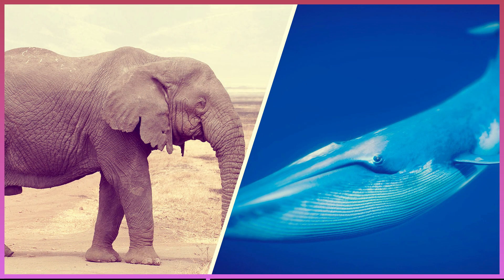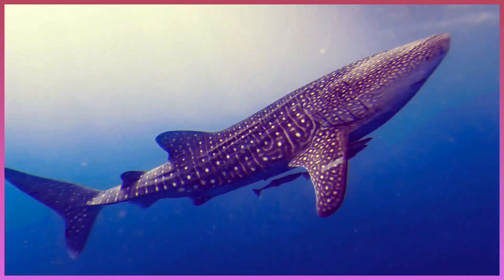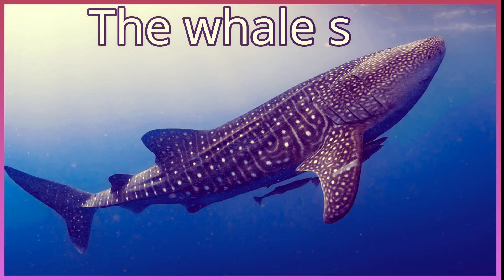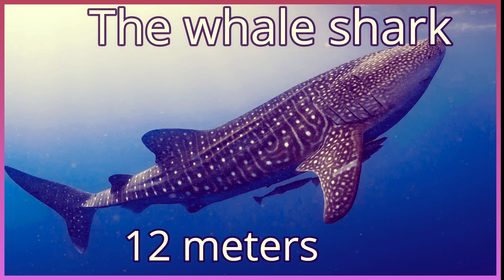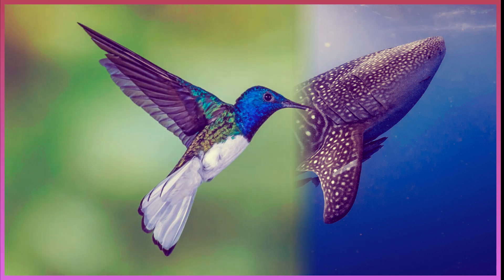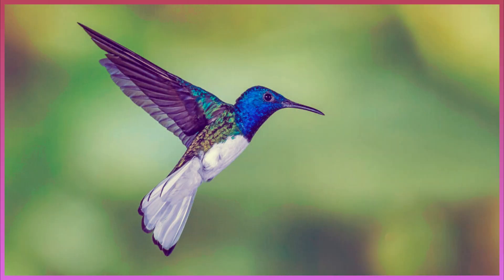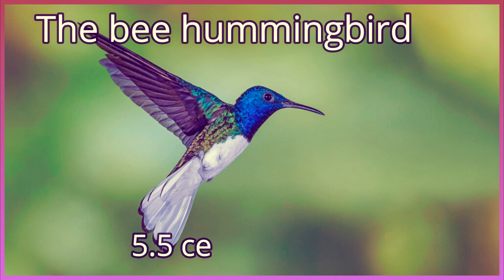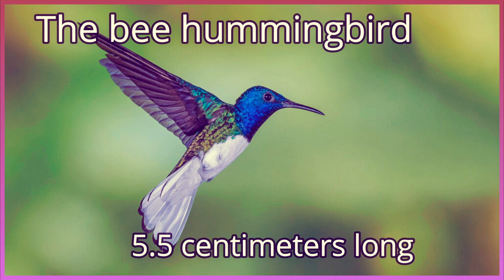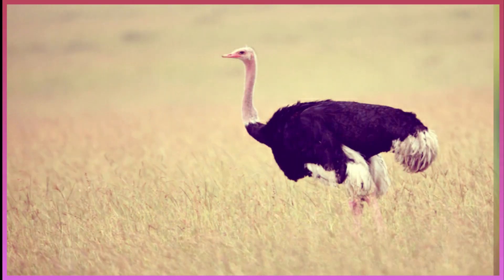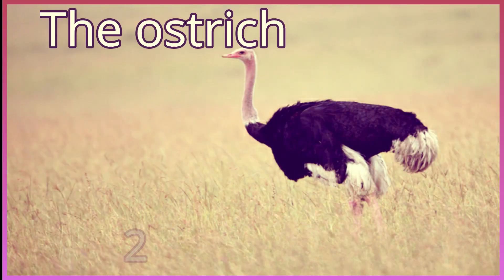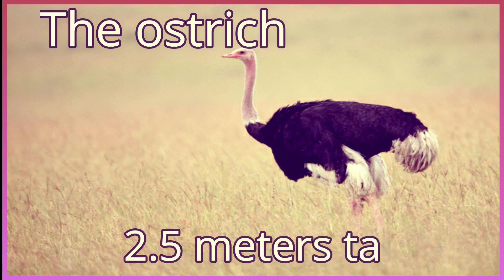The whale shark is the biggest fish in the world. It's smaller than the blue whale, at about 12 meters long. The smallest bird is the hummingbird, which is about 5.5 centimeters long. It lives in Cuba. The biggest bird is the ostrich — it can be 2.5 meters tall. Ostriches are faster than leopards, but they can't fly.